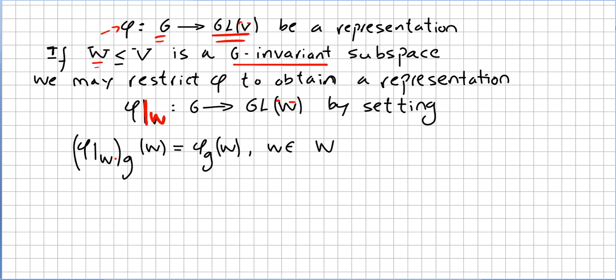By setting, and we will do it in this way: phi restricted to W, on g in the group G, will be phi of g applied to w for all w in the subspace.